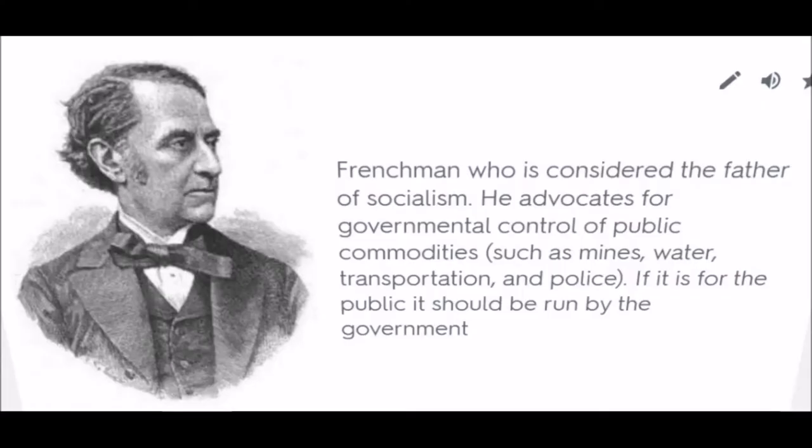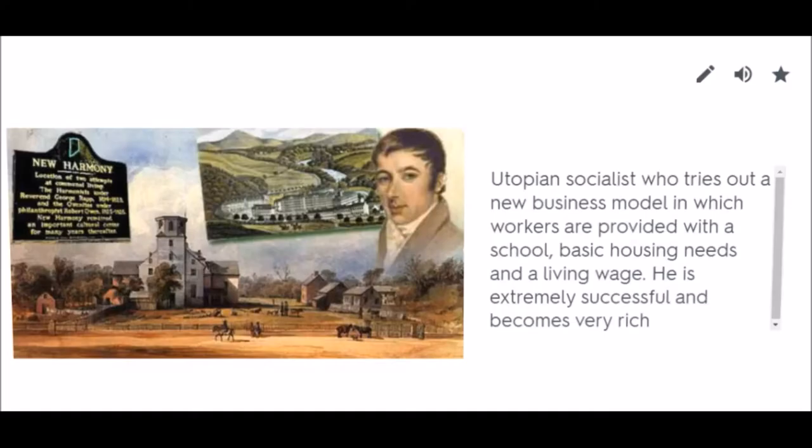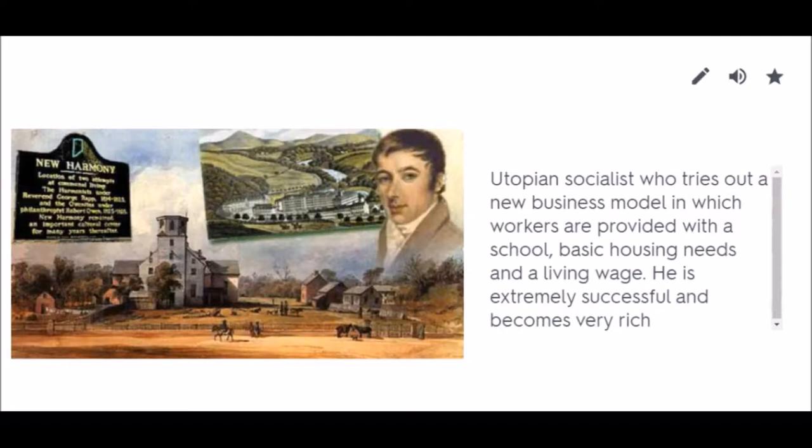Louis Blanc: A Frenchman considered the father of socialism. He advocates for governmental control of public commodities — if it is for the public, it should be run by the government. Robert Owen: A utopian socialist who tries out a new business model in which workers are provided with a school, basic housing needs, and a living wage. He is extremely successful and becomes very rich.